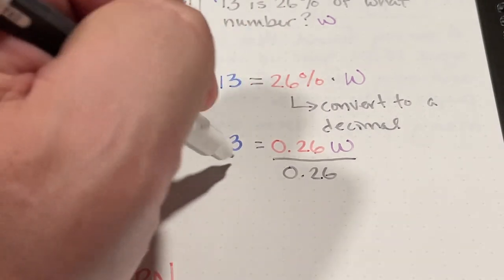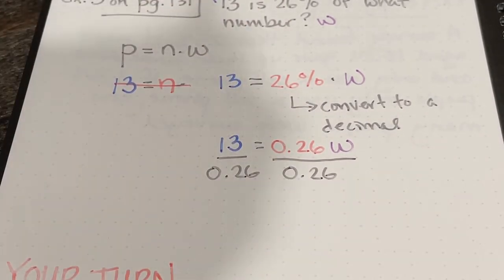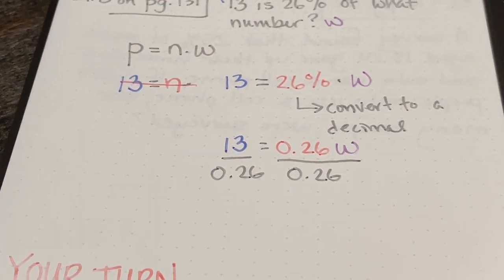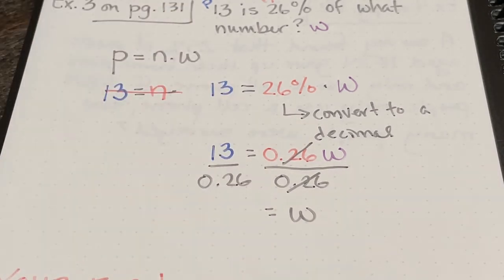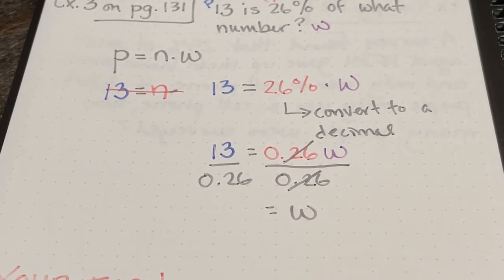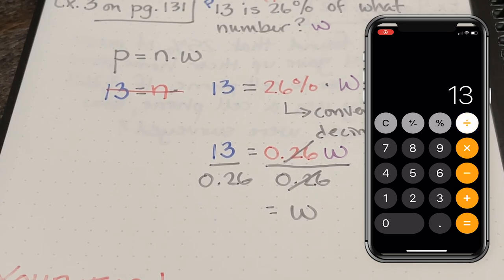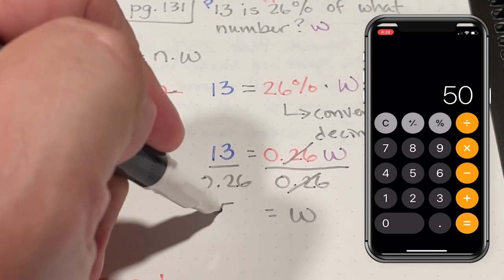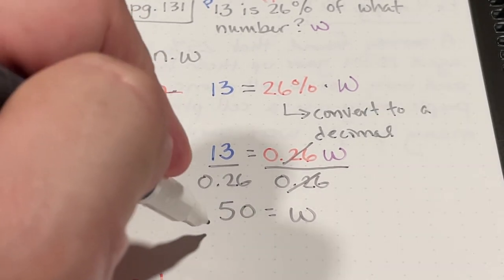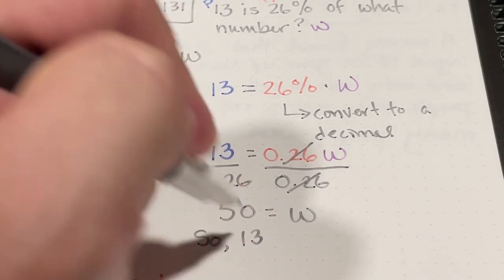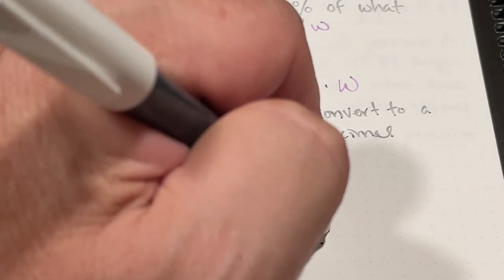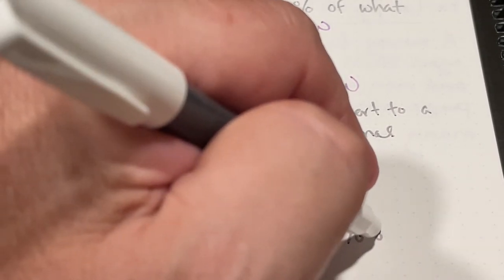So the last step in this problem is to divide both sides of the equation by the coefficient of w, which is 0.26. 0.26w divided by 0.26 is just going to be 1w. And now I'm going to take 13, and I'm going to divide it by 0.26. So 13 is 26% of 50.